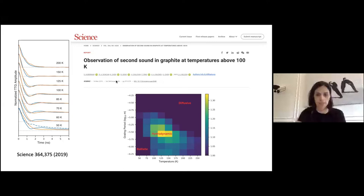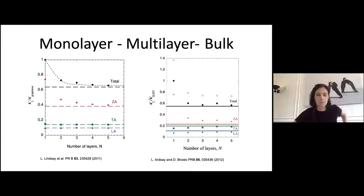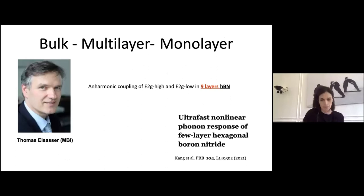This was proposed for graphene and multilayer systems in 2014, and five years later it was confirmed experimentally using thermal grating experiments, where by changing the grating period they could transition from ballistic to diffusive regime and observe the hydrodynamic regime up to temperatures well above 100 K. Moving to the second part: passing from the monolayer to the bulk, the total thermal conductivity already reaches the bulk value at around four or five layers.